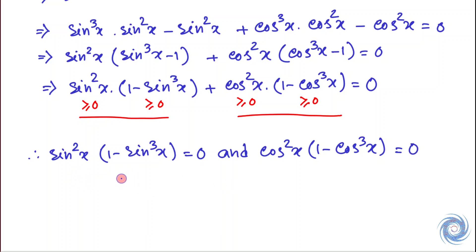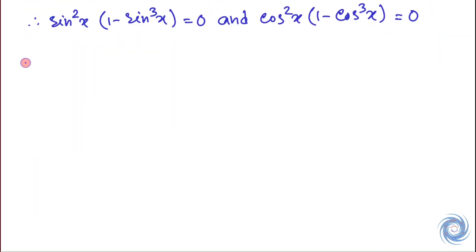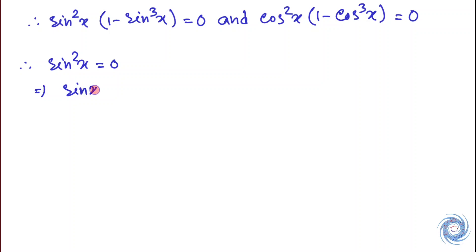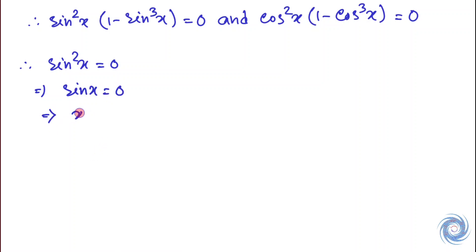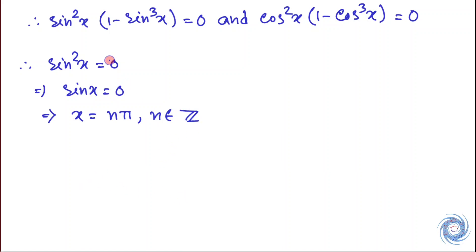From the first equation we have sin²x(1 - sin³x) = 0. This gives us either sin²x = 0, which implies sin x = 0, and therefore x = nπ where n belongs to ℤ. Or, we take the second factor: 1 minus sin³x equals zero.